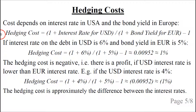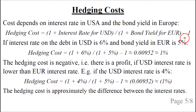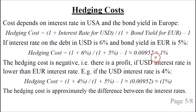We can also calculate the hedging cost as a percentage. The formula is: one plus the interest rate for the loan in the United States, divided by one plus the bond yield in Europe, minus one. If the interest rate in the United States is 6 percent and the bond yield in Europe is 5 percent, we plug it into the formula and get approximately 1 percent as our hedging cost.